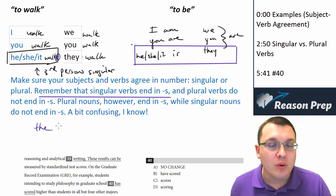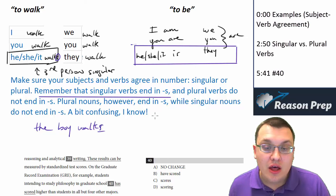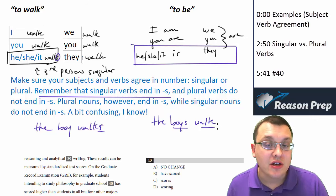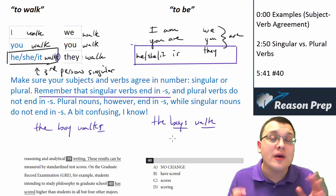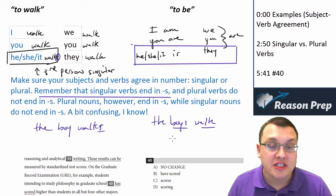So notice the boy, singular noun, walks, singular verb. This has an S. The boys walk, plural subject. The plural subject ends in S, the plural verb does not. So just keep that straight. You can always recover this by just making up some sentences in your head, and you'll see which is which.